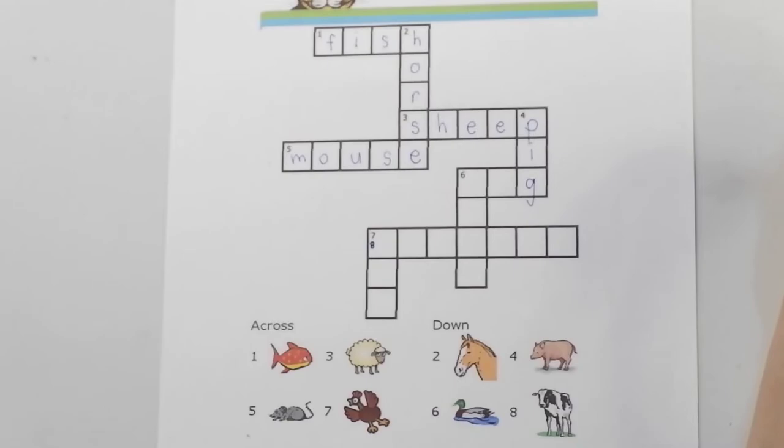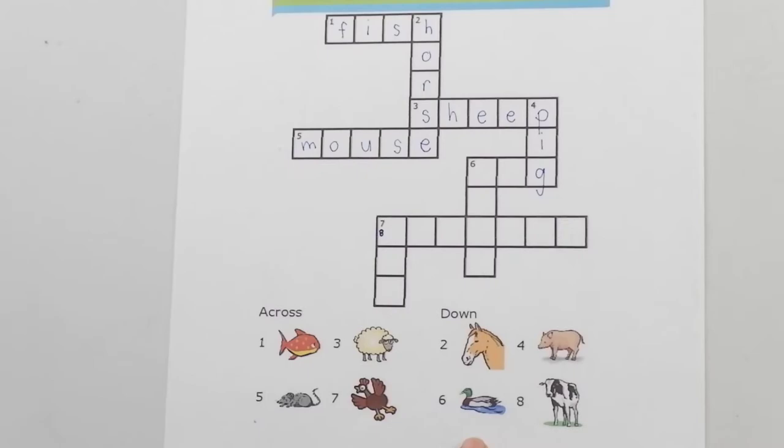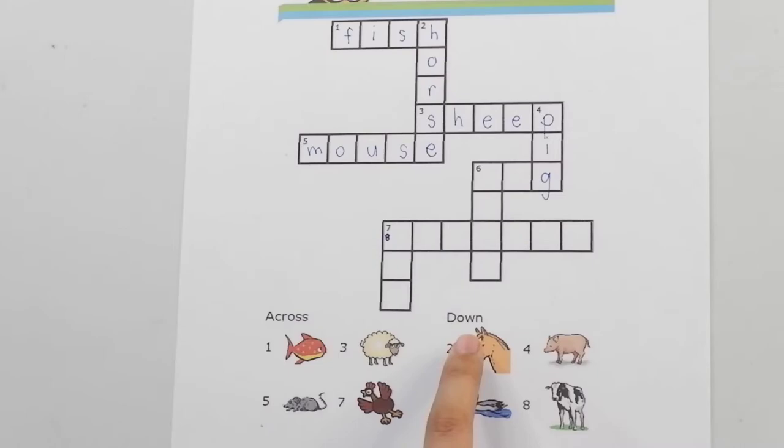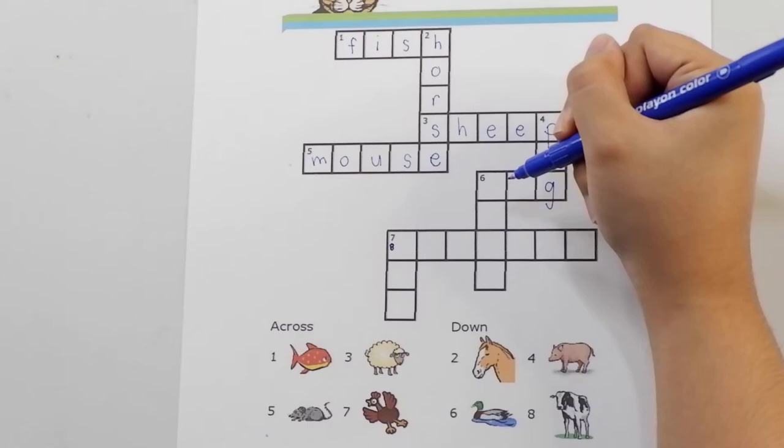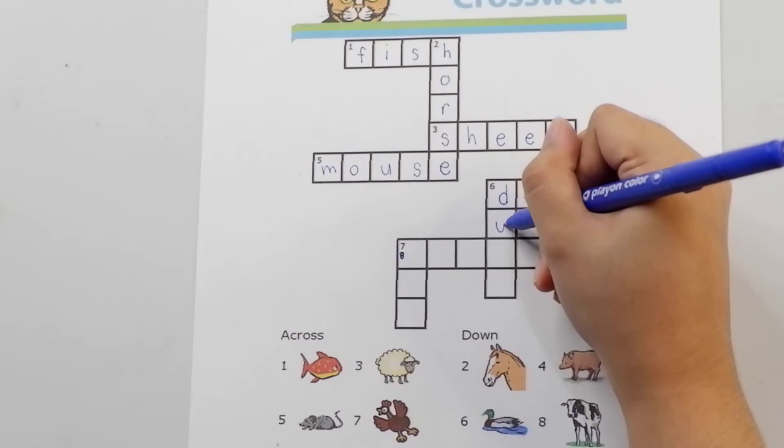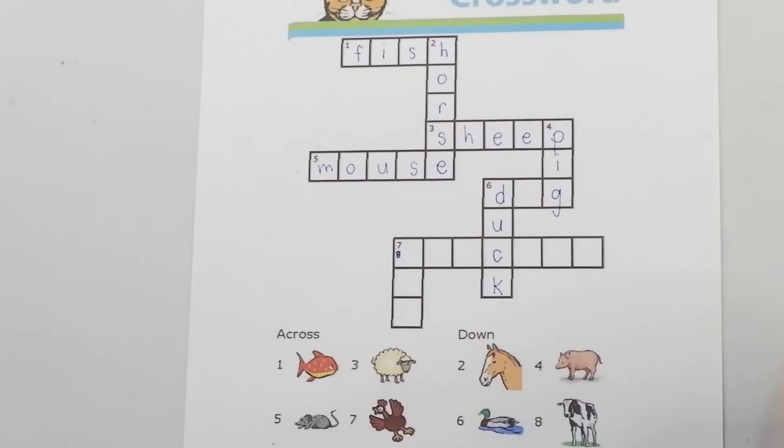Now, let's go to number six. Number six is under down. That means we have to write the answer vertically going down. Now, let's go to box number six to write the answer duck. D-U-C-K. Duck.